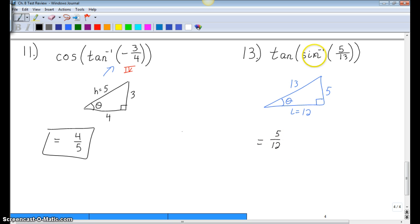Now here, again, sine inverse, so we're in quadrants 1 or 4. We're positive 5 thirteenths, so we're in quadrant 1. Tangent is also positive in quadrant 1. You might happen to run across ones where you would flip the sign based on the quadrant.